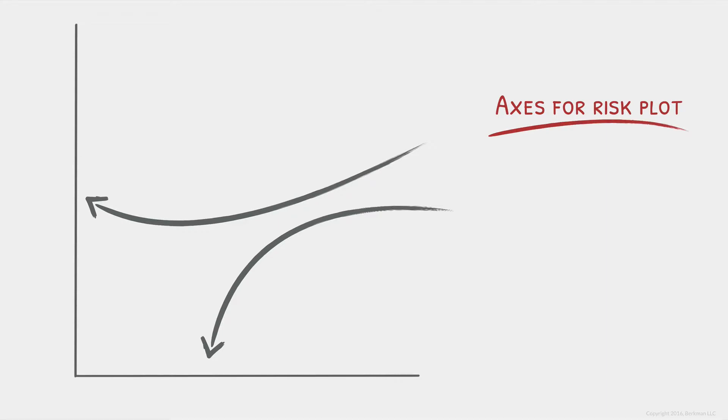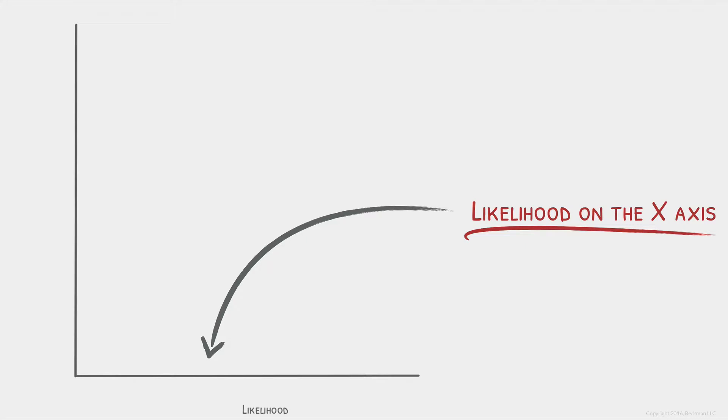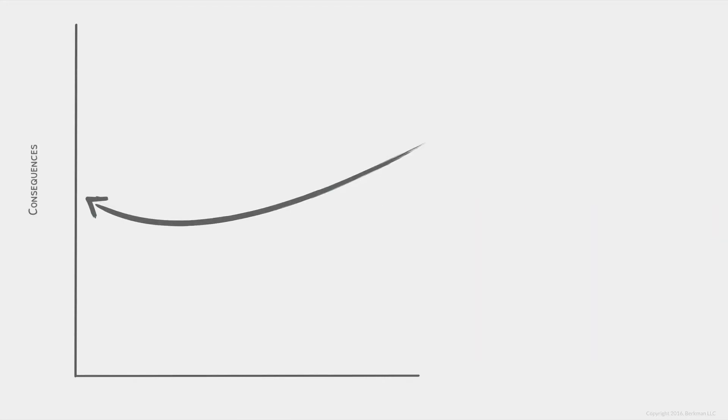Label the x-axis likelihood. This will accommodate our likelihood scale we saw earlier. Label the y-axis consequences. This will accommodate our consequences scale.